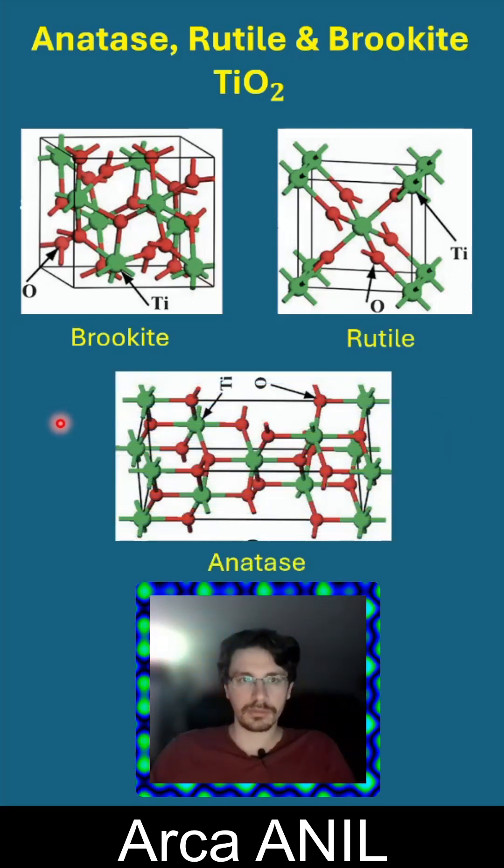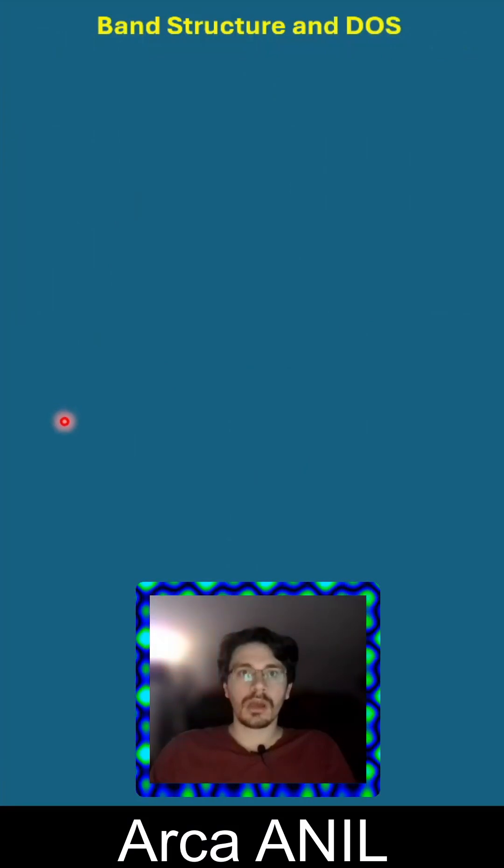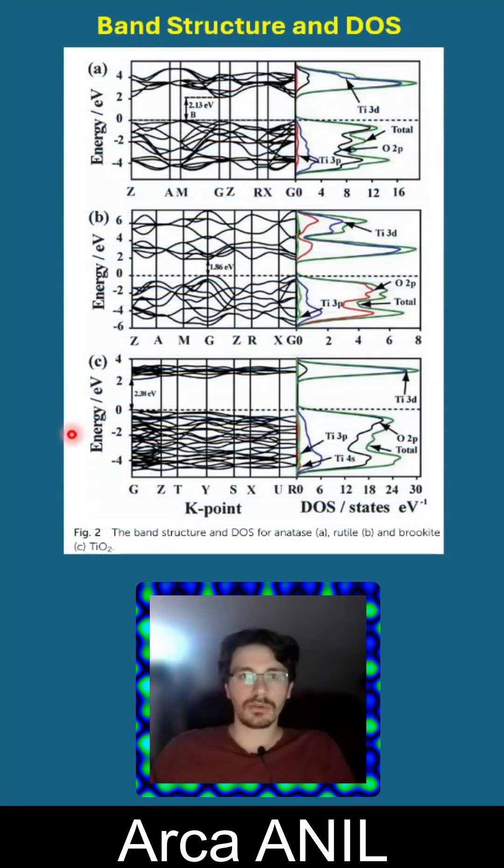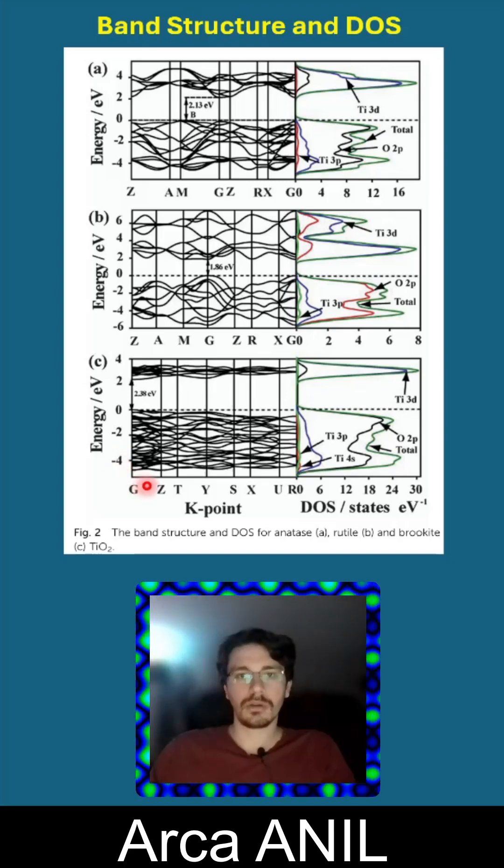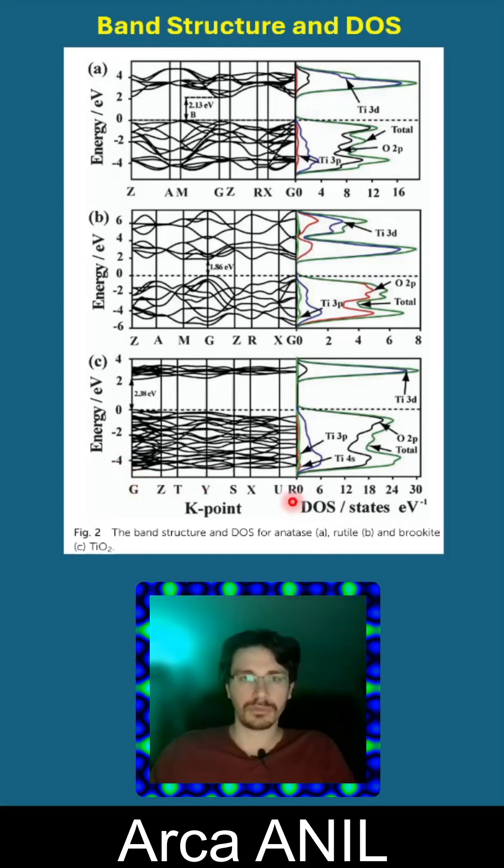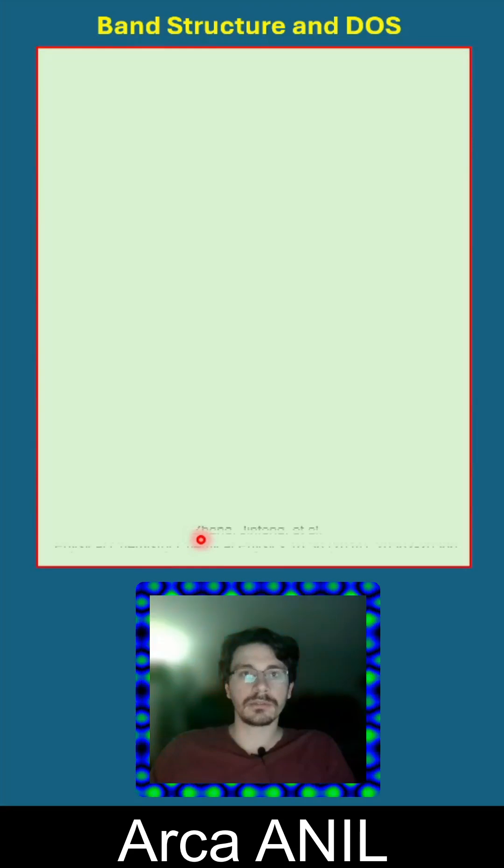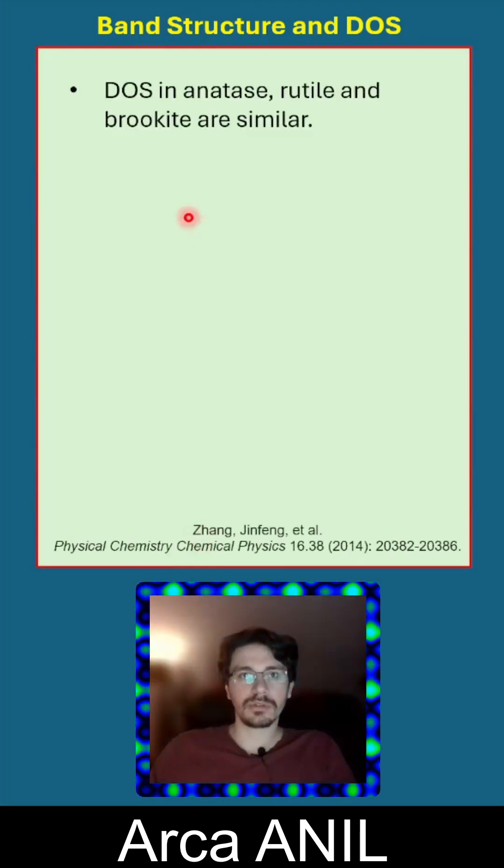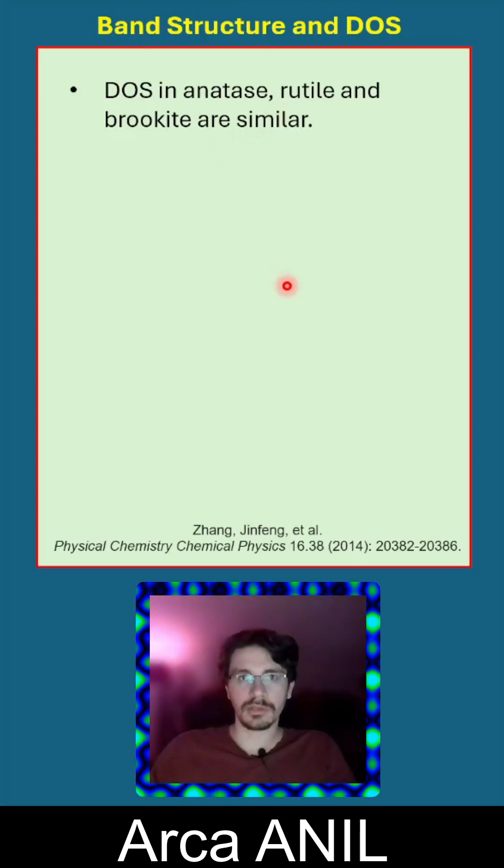All the phases are different from each other. Band structure and density of states were calculated by research groups. The density of states in anatase, rutile, and brookite are similar.